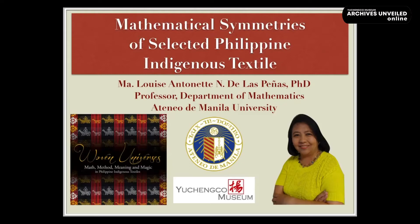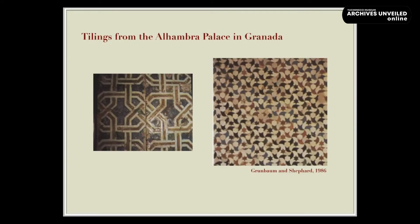Symmetry analysis of designs of various cultures has been addressed by mathematicians since the early part of the 20th century. One example are the designs in the tilings that adorn the Alhambra Palace in Granada, Spain.